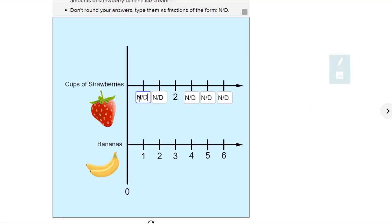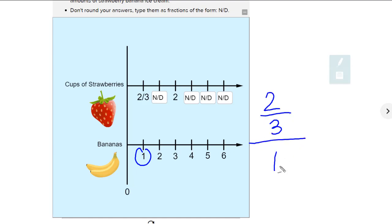So then I can write my answer. If I have one banana, I will use two thirds cups of strawberries. So now I can write my rate when I have one cup of bananas as two thirds over one. But since I have this one in the denominator, this rate right here is now the unit rate.